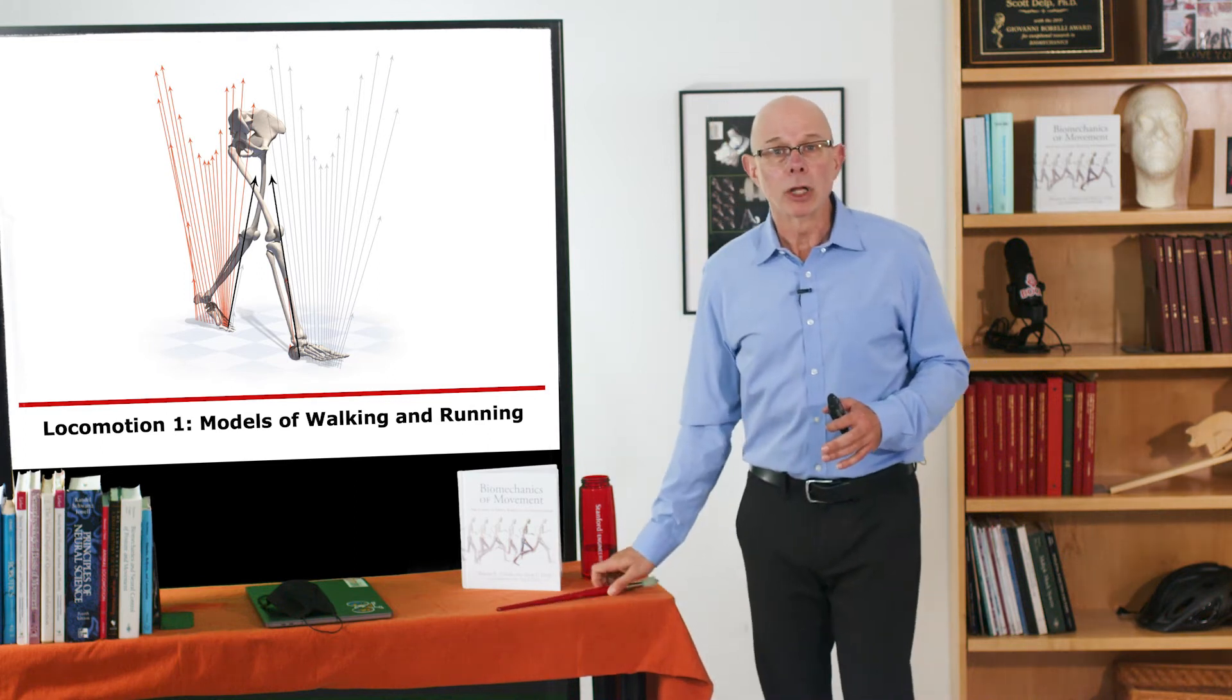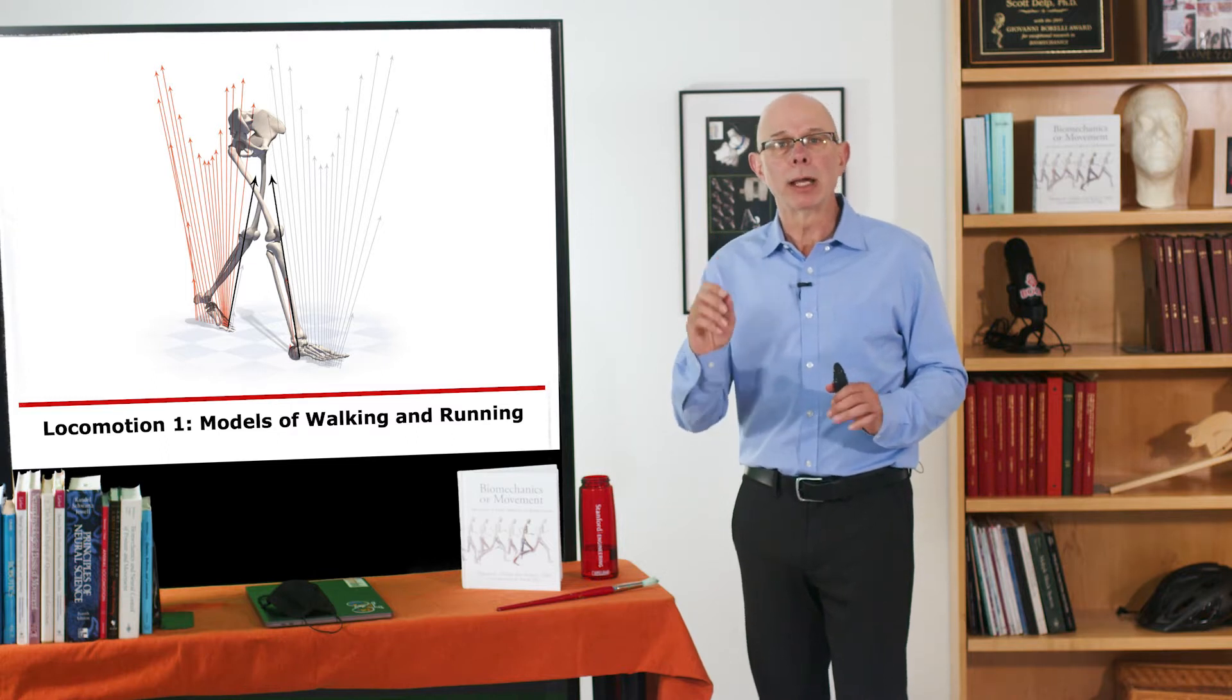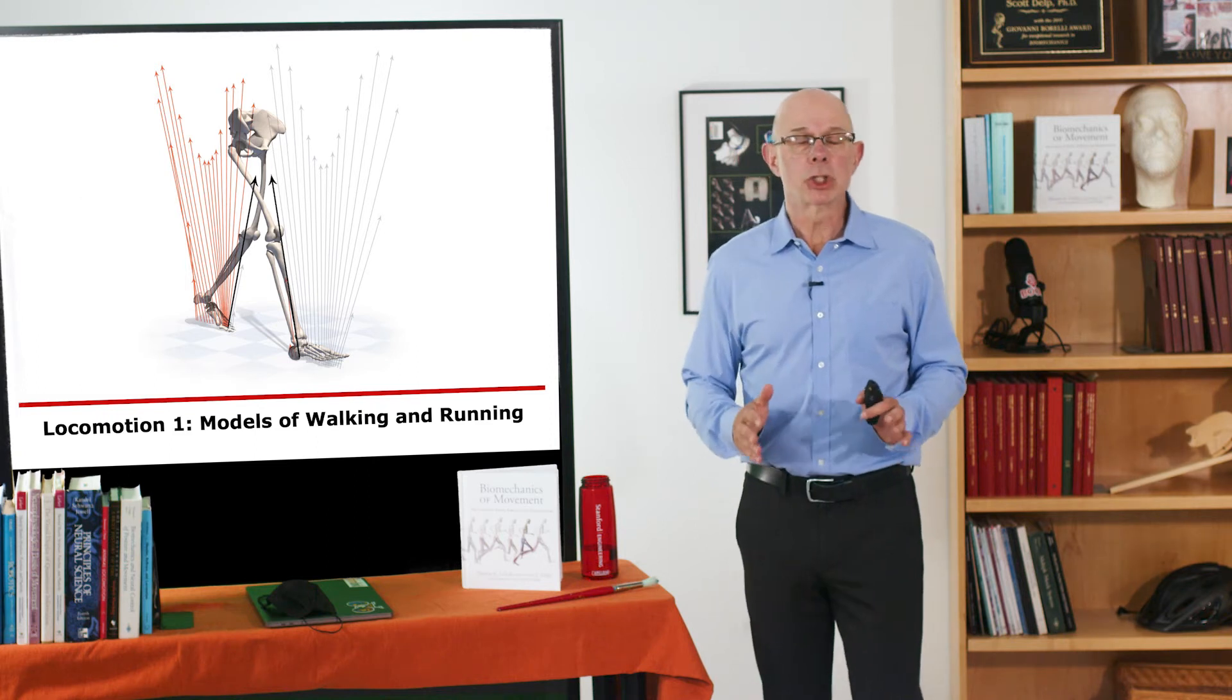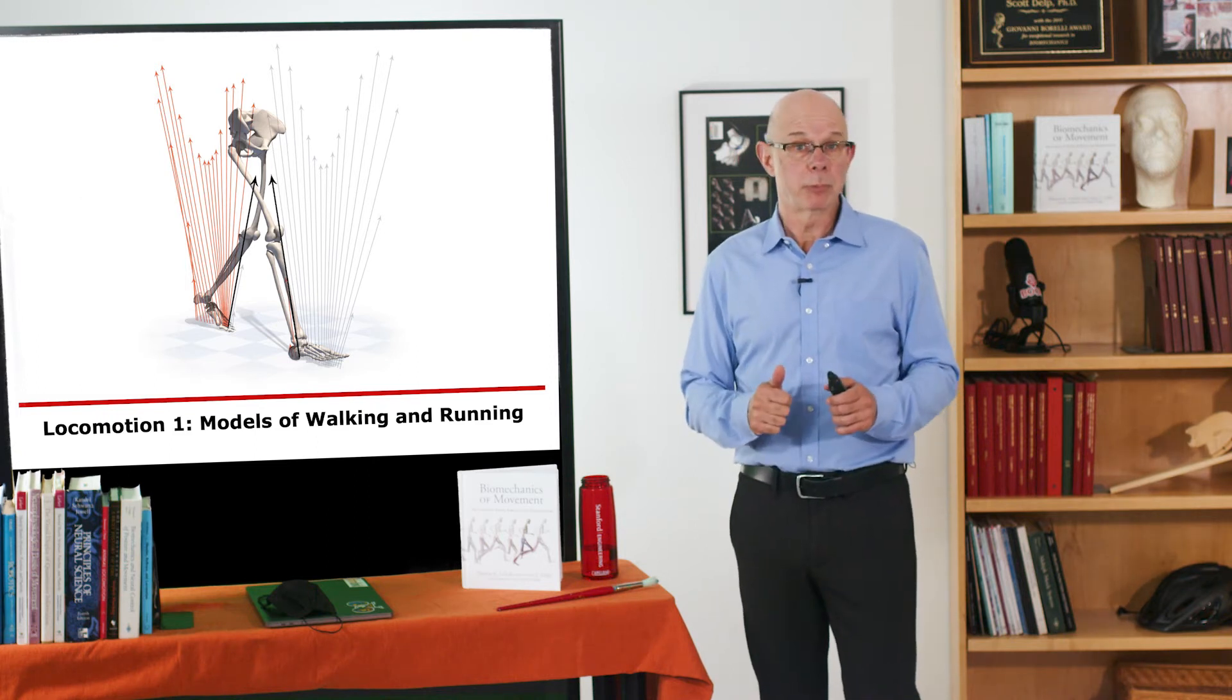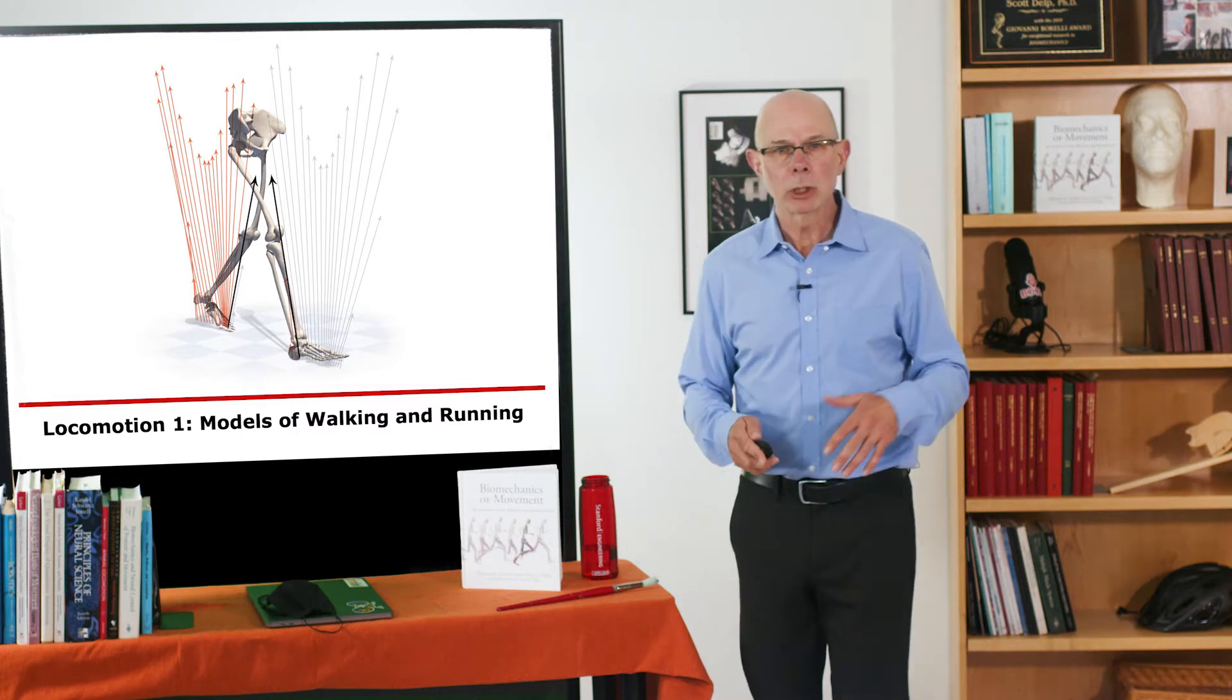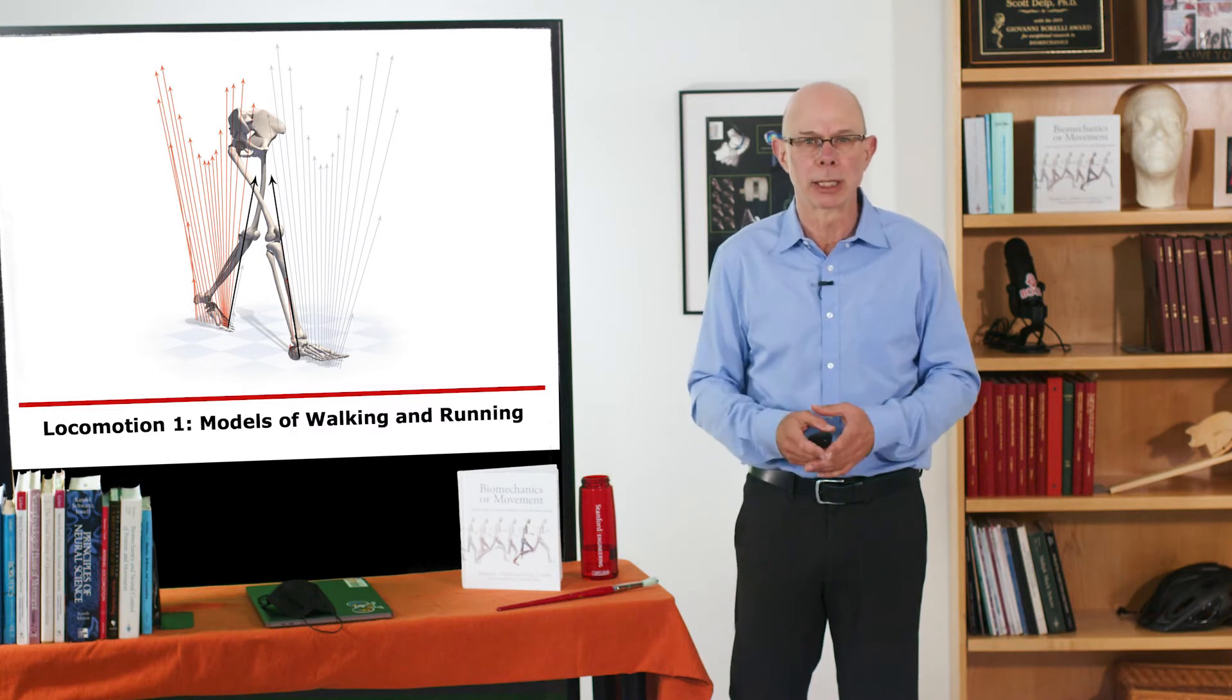The arrow on the leading limb is directed upward to support body weight and backward towards the back of the body. On the trailing limb, it's just the opposite. It's supporting body weight upward, but it's also directed forward. And we'll learn exactly what this means in terms of how we support body weight and control our speed.